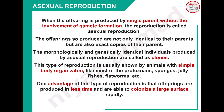Here are some important points regarding asexual reproduction. پہلا: when the offspring is produced by single parent without the involvement of gamete formation - اس طرح کا reproduction asexual کہلاتا ہے۔ Second: the offspring so produced are not only identical to the parent but are also exact copies of their parent - صرف identical نہیں، exact copies ہوتے ہیں کیونکہ جو genes کا set up parent میں ہے same as it is copy ہو کے offspring میں آ گیا ہے۔